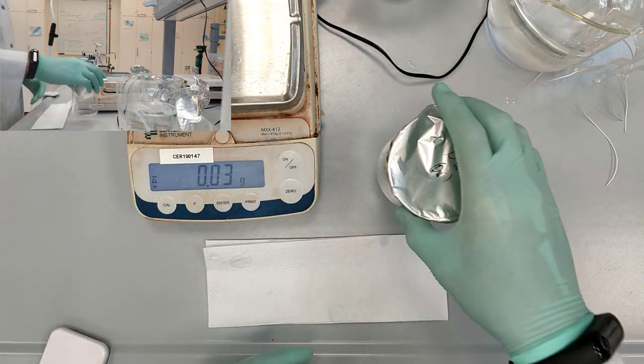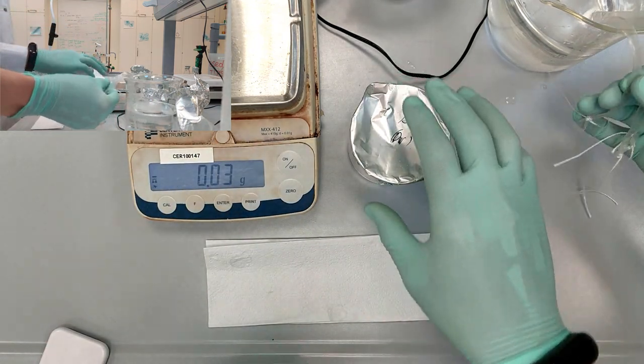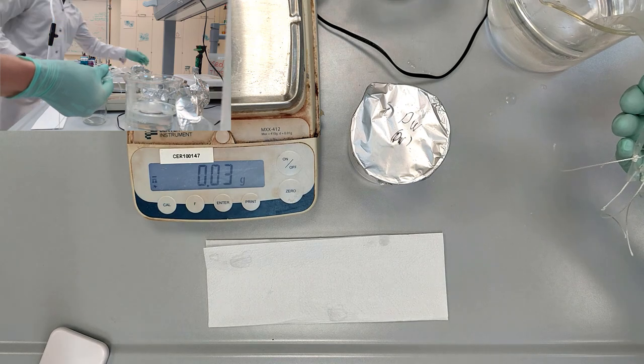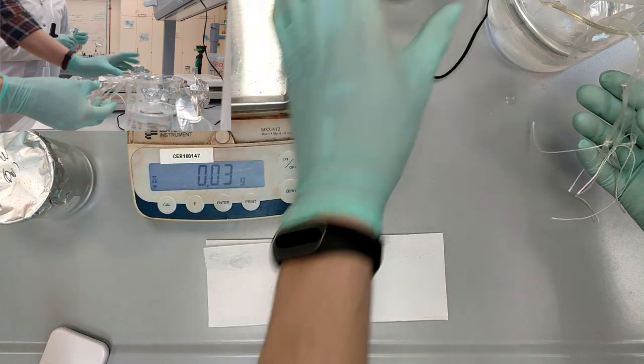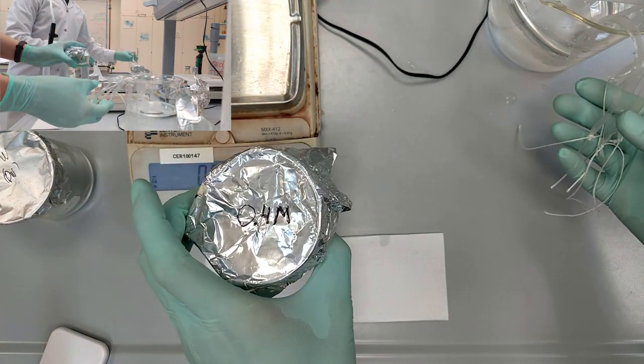Now we are going to prepare the dialysis tube with distilled water inside. It will serve as the negative control for our whole experiment.